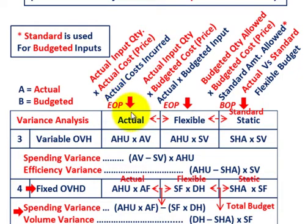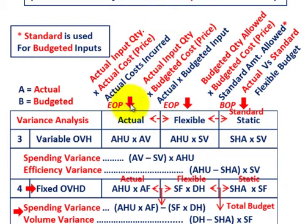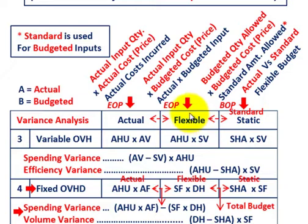At the end of the period we know our actual costs, and at the beginning we have our standard or static amount. Now we can determine our flexible amount — that's the actual input quantity times the budgeted cost or price. So the flexible budget is really actual quantity times some budgeted input.